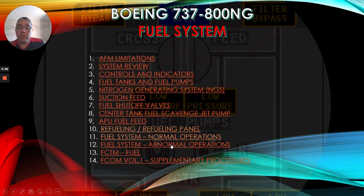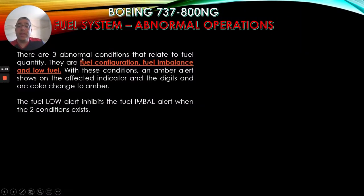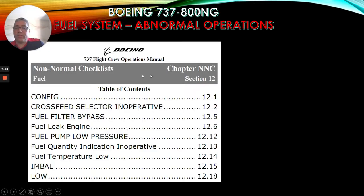Now we will continue with abnormal operations. There are three abnormal conditions that relate to fuel quantity: fuel configuration, fuel imbalance, and low fuel. With these conditions, an amber alert shows on the affected indicator and the digits change to amber color. The fuel low alert inhibits the fuel imbalance alert when the two conditions exist. These are the non-normal checklists in section 12 of the QRH for the fuel system.